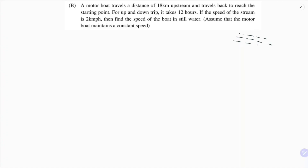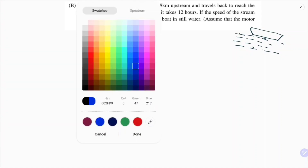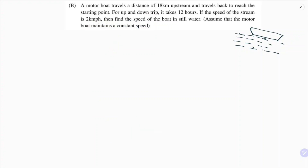When you get a downstream or upstream problem, write four steps. The speed of the stream is given as 2 kilometers per hour. Let the boat speed be x kilometers per hour, then write those four steps.